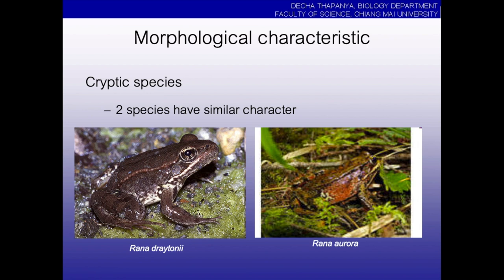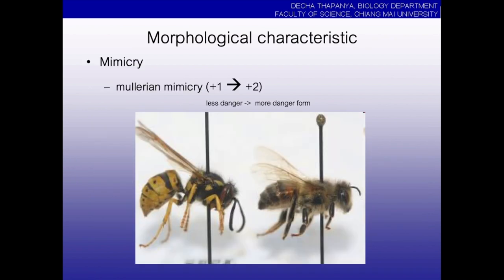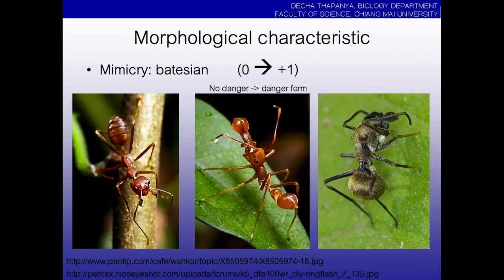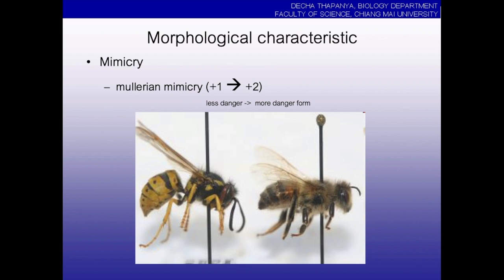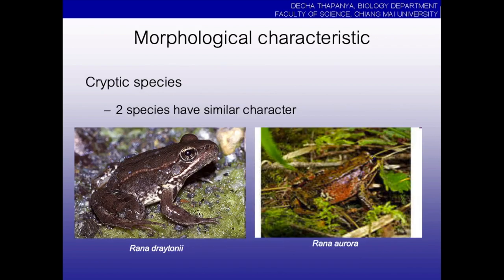The second weak point is cryptic species. The idea of Mullerian mimicry is for evolution — to appear more dangerous. But cryptic species have no clear objective. Sometimes they look similar, but the similarity does not make them look more dangerous. We find cryptic species in many organisms, like frogs — this Rana group looks very, very similar in pattern, but they are different species.